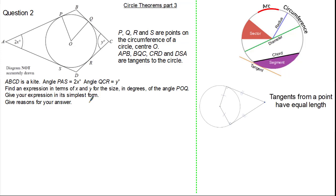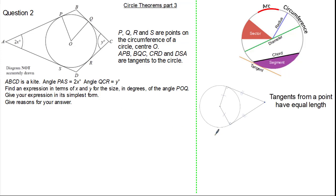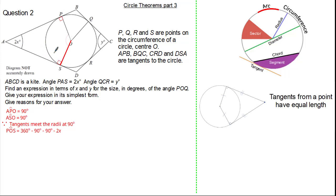Why don't you give it a try and press pause if you need. Let's add in an extra radius. Angle APO is 90 degrees and angle ASO is also 90 degrees, because tangents meet the radius at 90 degrees. Now we can work out angle POS. We have a quadrilateral, so 360 subtract 90, subtract 90, subtract 2X gives us an expression of 180 minus 2X for angle POS. This is because angles in a quadrilateral sum to 360 degrees.